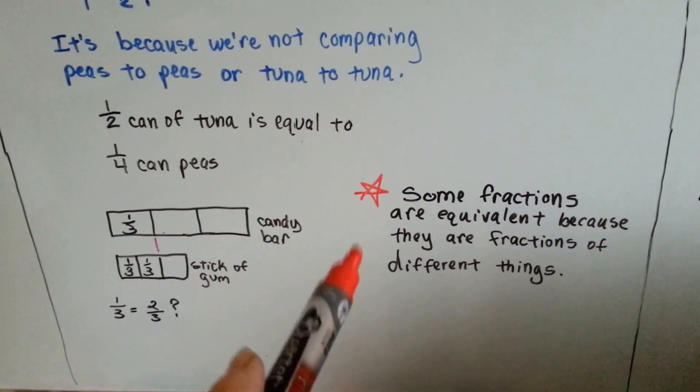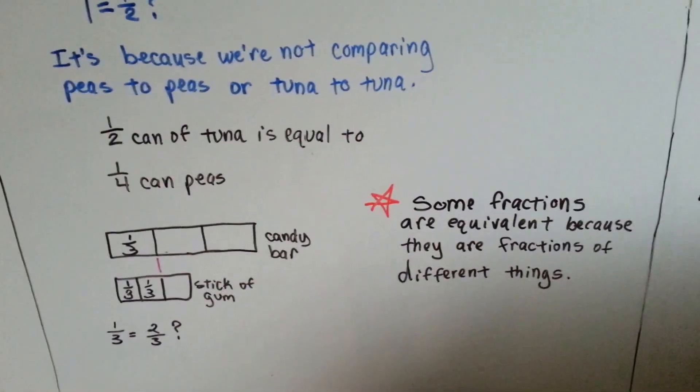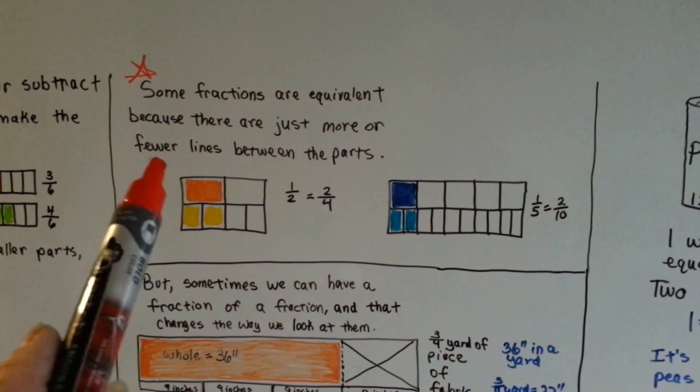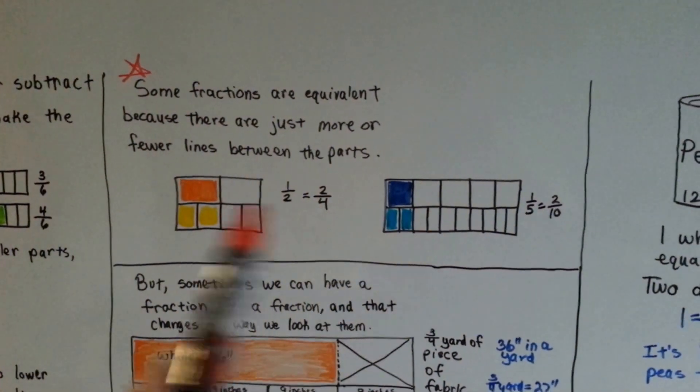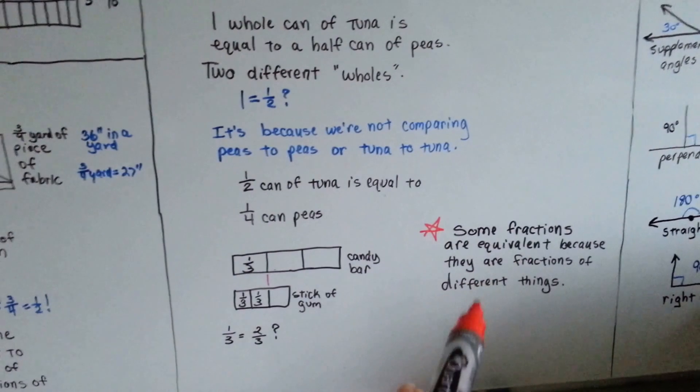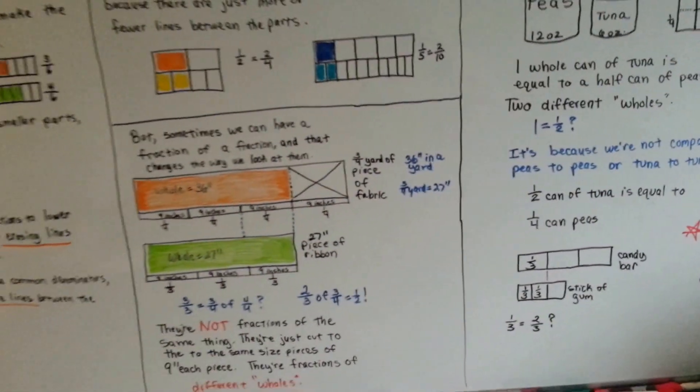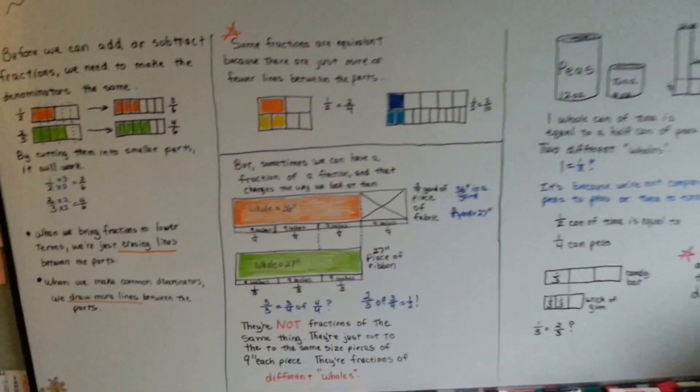So, some fractions are equivalent because they're fractions of different things. Some fractions are equivalent because there's just more or fewer lines between the parts. Some are fractions of different things. See the difference? Now you know how two-thirds can equal two-fourths.